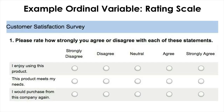A typical example of an ordinal level of measurement is an n-point rating scale, which you may have seen in customer satisfaction surveys. Here we have a five-point rating scale to rate how much the respondent agrees or disagrees with a provided statement. There is an obvious order between the values of this scale, but it is not known if the difference between any two consecutive ratings — for example, between neutral and agree — is necessarily the same as the difference between disagree and neutral.